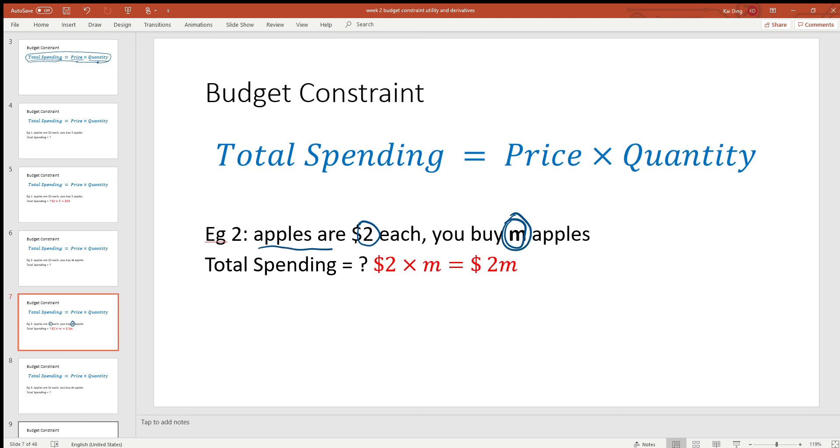Now suppose apples are $2 each, so the price of apple P is equal to 2. And you decide to buy m apples, so the quantity of apples you're buying is equal to m.